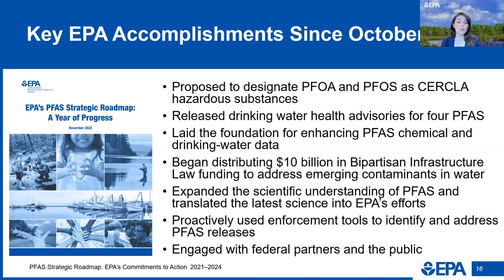EPA's PFAS work was informed by public webinars, stakeholder meetings, congressional testimony, and engagement with EPA's federal advisory committees. EPA is also coordinating with federal agency partners in the Biden-Harris administration. In addition, EPA's one-year progress report identified upcoming priority actions for 2023: proposing a national drinking water standard, announced on March 14th; taking final action on the proposed CERCLA designation for PFOA and PFOS; continuing to improve chemical data and safety; restricting upstream PFAS discharges to waterways; addressing PFAS in biosolids; and engaging with communities like we're doing here tonight.